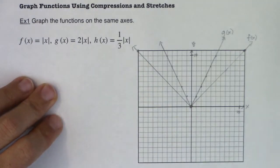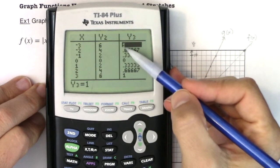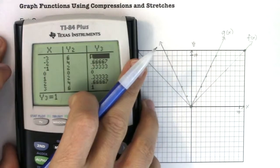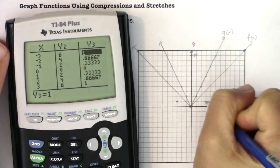Now, over here for h of x, that's over in my y three. I'm going to go ahead and pinpoint the nicer numbers. So it looks like negative three, one, zero, zero, and three, one. So let's try that. We add negative three, one, zero, zero, and three, one.